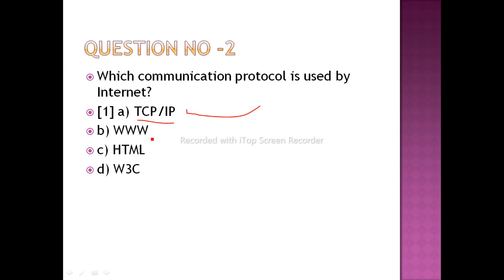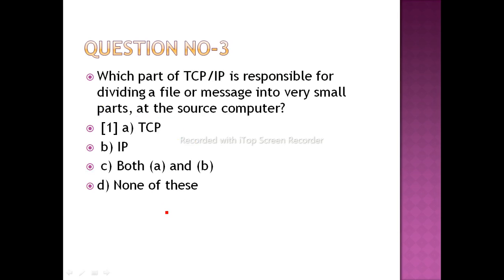WWW is the World Wide Web, written at the start of a web address. HTML is Hypertext Markup Language, a markup language written in Notepad used to design a web page. W3C is a consortium with standards for web servers. So, which communication protocol is used by the internet? The answer is TCP/IP. The rest are not protocols — they are different things.